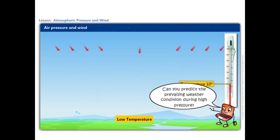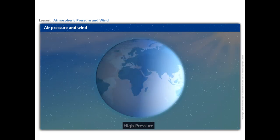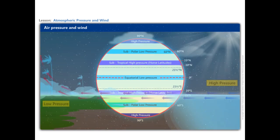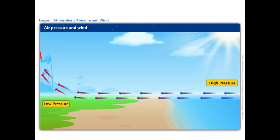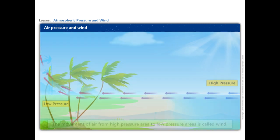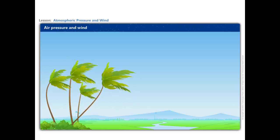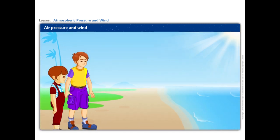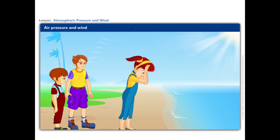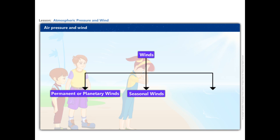High pressure is associated with clear and sunny skies. The air always moves from high pressure areas to low pressure areas — this movement of air is called wind. We can experience wind as it blows dry leaves down the pavement or uproots trees during a storm. At times, wind can be so strong that it is difficult to walk against it. Winds can be broadly divided into three categories: permanent or planetary winds, seasonal winds, and local winds.